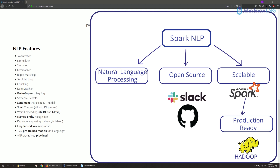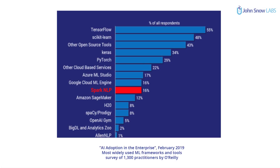The idea of Spark NLP is to be industrial grade, meaning that it is sought for deployment and production environments such as Docker images, Kubernetes, Databricks, Cloudera, Google Cloud, Amazon, and others. When speaking about industrial grade, we refer to the fact that Spark NLP is within the top 10 most utilized libraries in the enterprise.